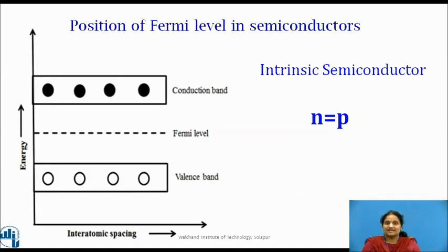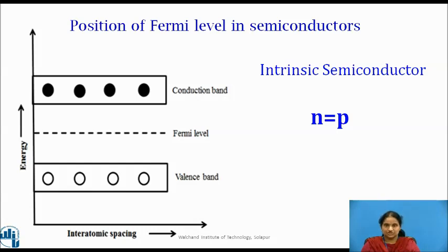Now let's know the position of Fermi level in semiconductors. We have seen that the probability of occupation of energy levels in the valence band and conduction band is called the Fermi level. At absolute zero temperature, an intrinsic semiconductor acts as a perfect insulator. However, as the temperature increases, free electrons and holes get generated. In intrinsic or pure semiconductor, the number of holes in the valence band is equal to the number of electrons in the conduction band. Hence, the probability of occupation of energy levels in the conduction band and valence band are equal. Therefore, the Fermi level for the intrinsic semiconductor lies in the middle of the forbidden band.